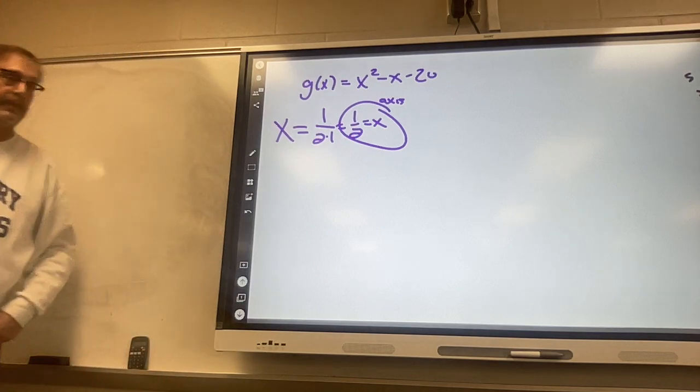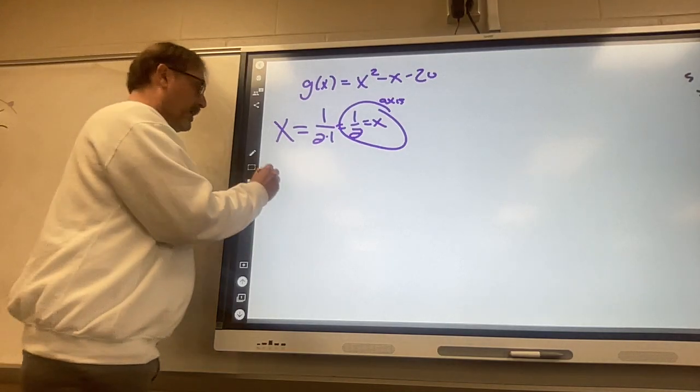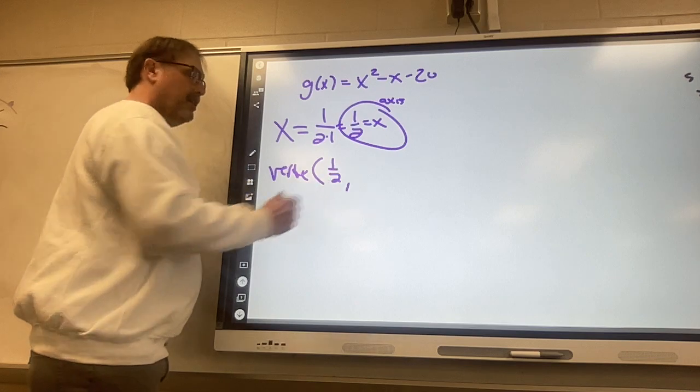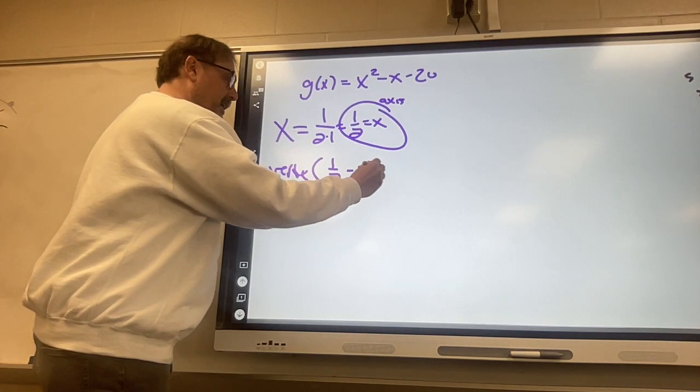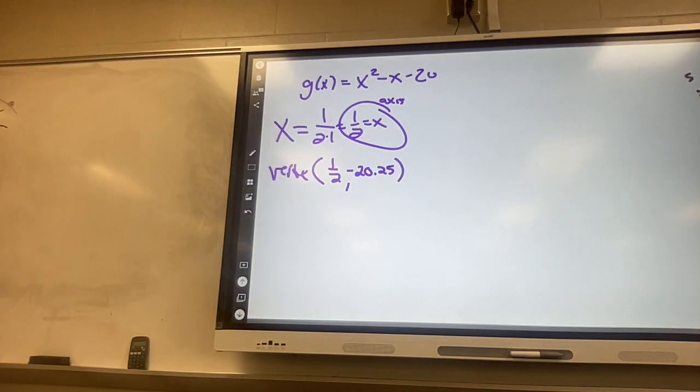Welcome back, unnamed student. We're live streaming so I can't say your name out loud. You might want to move where you can see this a little better. Has anyone plugged that in for my vertex? Say it: one-half comma negative 20.25.